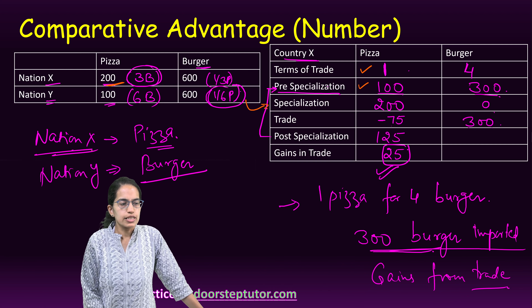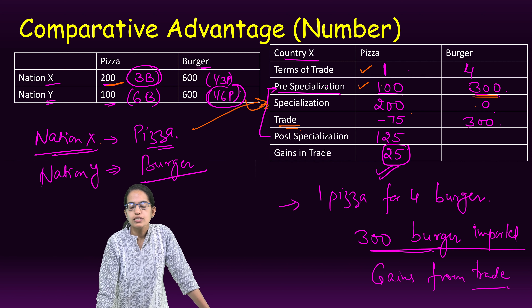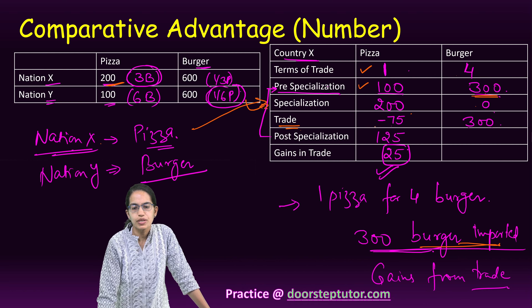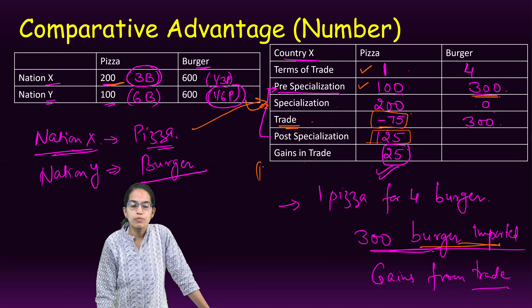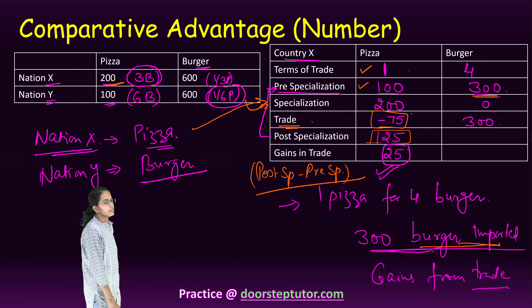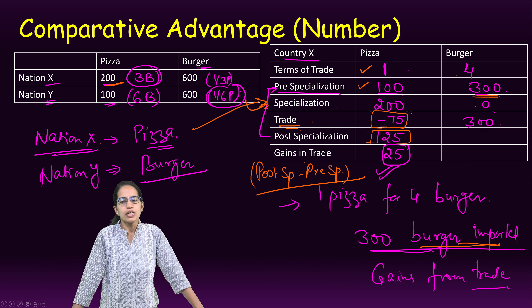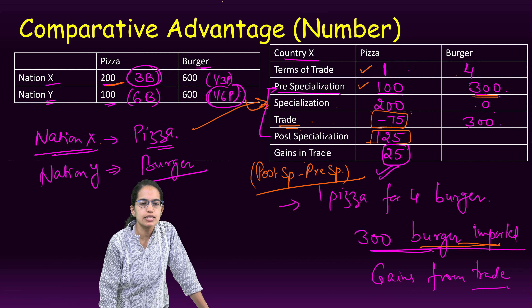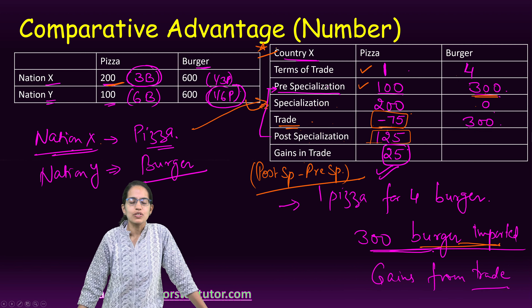Let me explain this again. The first two columns are already given in the question — the terms of trade is 1 pizza for 4 burgers, and initially we have 100 pizzas and 300 burgers. Specialization gives 200 pizzas and 0 burgers, since nation X specializes in pizza. When importing 300 burgers at the ratio of 1 pizza to 4 burgers, the trade is minus 75 pizzas. Post-specialization equals specialization plus trade: 200 minus 75 equals 125. Gains from trade is 125 minus 100, which equals 25.